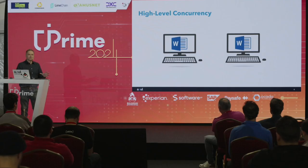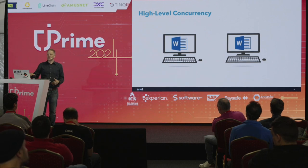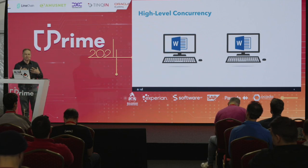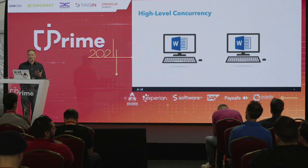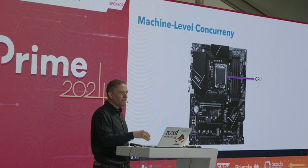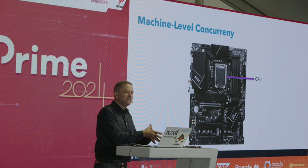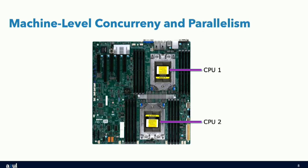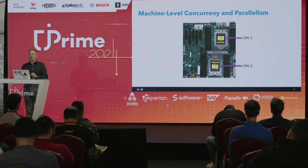We can have high-level concurrency — separate machines, multiple people using applications at the same time — and low-level machine concurrency, where an operating system does timesharing with preemption and time quanta. With more modern machines we can switch to the idea of having multiple CPUs, which introduces both concurrency and parallelism at the same time.